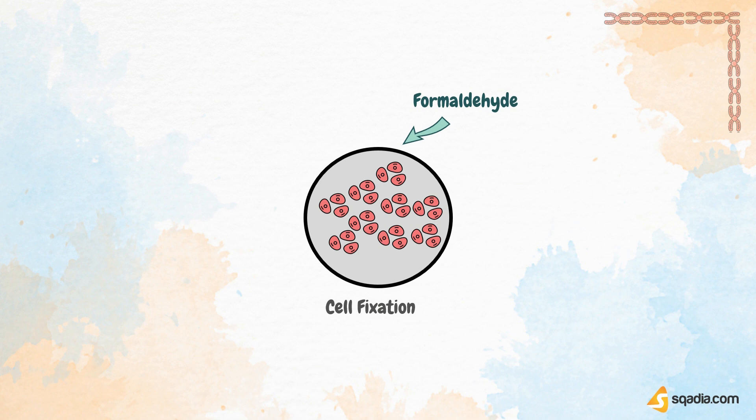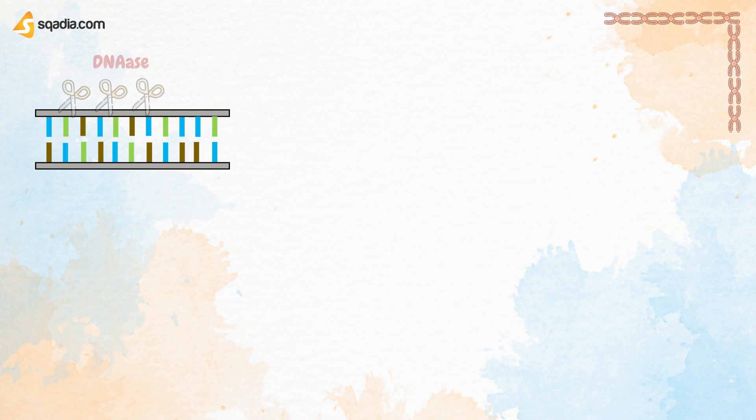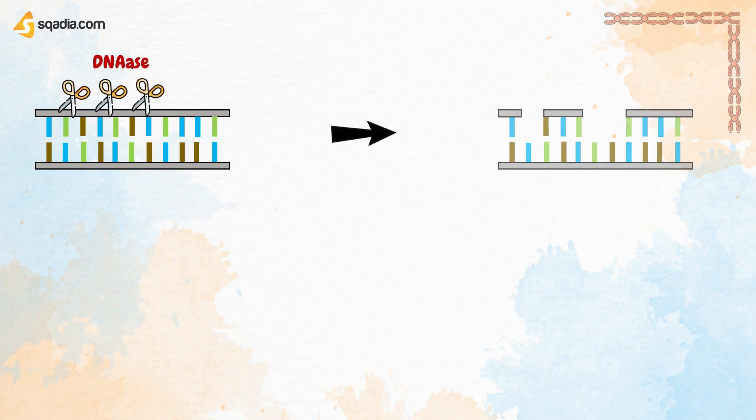Formaldehyde causes cross-links. Then probes are added. The sequence of these probes should be complementary to the chromosomal region of interest. Using DNA, we can make random cuts on the DNA — these cuts are also called NICs.